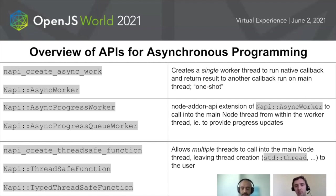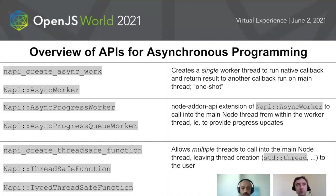One crucial difference between the async workers — progress or otherwise — and the thread-safe function is that in the case of async workers, the threading implementation is not up to you. You're relying on Node.js to create the threads. Whereas in the case of the thread-safe function, Node.js creates only the communication mechanism, and it is up to you to use your own threading implementation or create a new one.